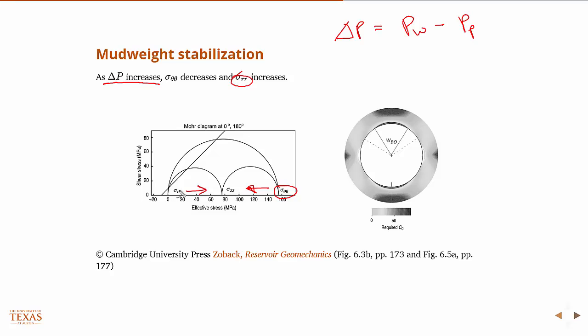And so if I'm moving those together, I'm shrinking these Mohr circles, getting them away from that failure line. So I'm shrinking them, getting them away from it, therefore providing some stabilization from breakouts.